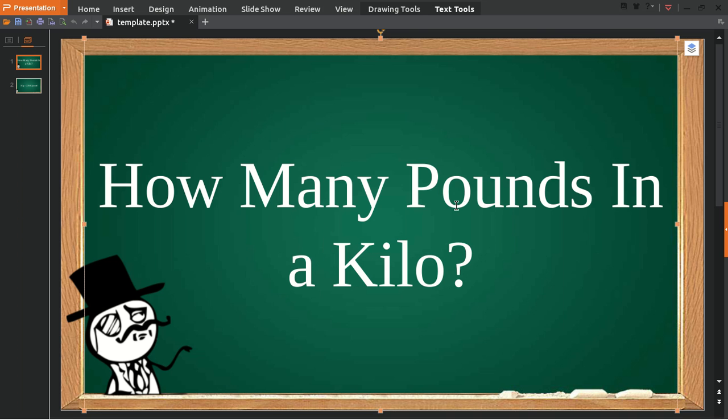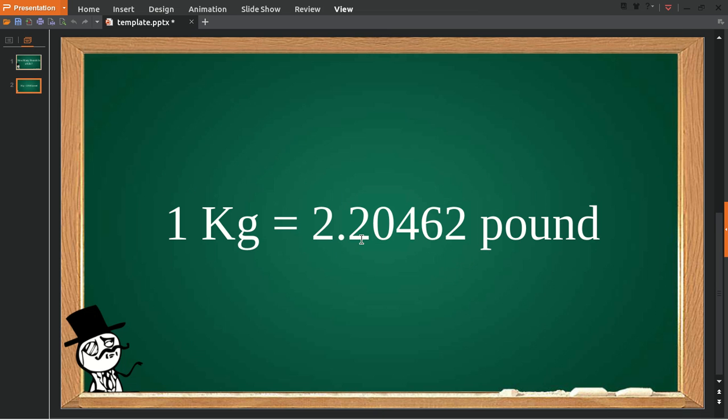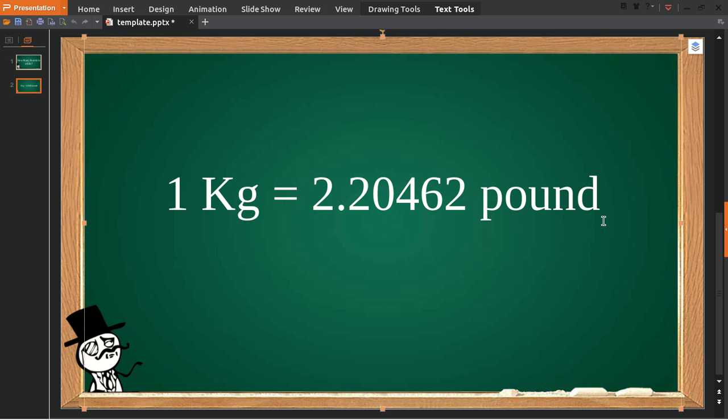How many pounds in a kilo? To answer the question I've provided you with the answer. As you can see, one kilogram is equal to 2.20462 pound.